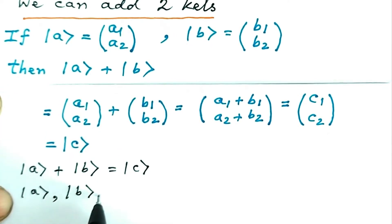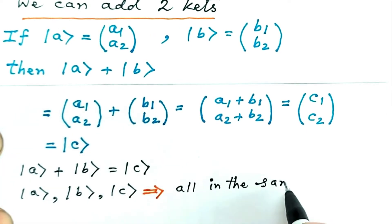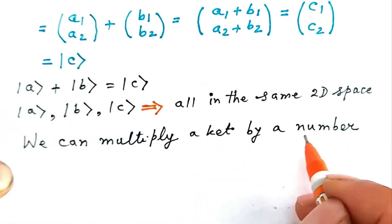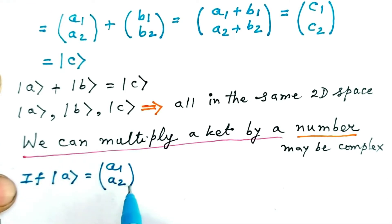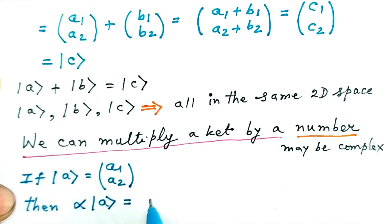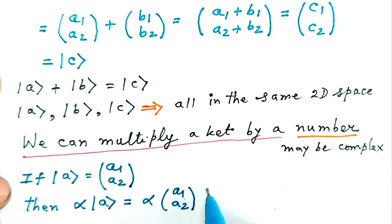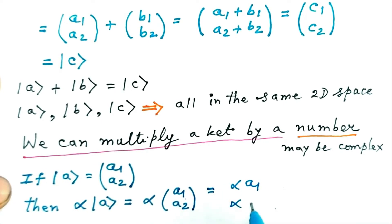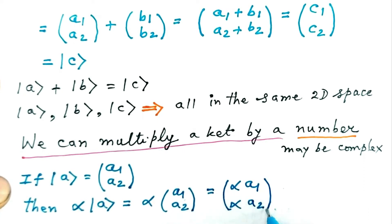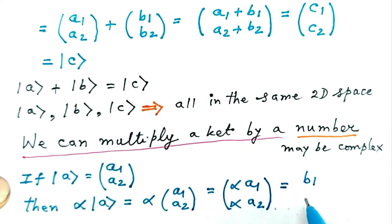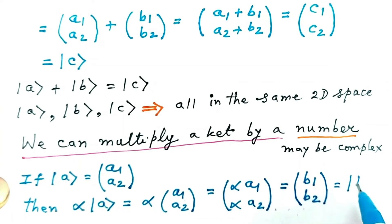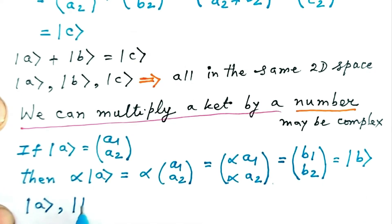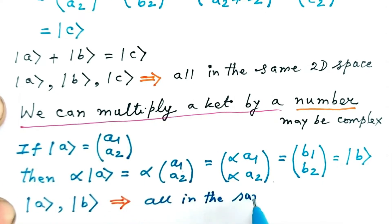Note that Ket A, Ket B, and Ket C are all Kets in the same 2D space. Let us now multiply a Ket by a number, which in general may be a complex number. If Ket A is the 2×1 column matrix (A1, A2), then alpha times Ket A gives alpha times the column matrix (A1, A2). Taking alpha inside, the elements become (alpha·A1, alpha·A2). Defining alpha·A1 as B1 and alpha·A2 as B2, a new column matrix (B1, B2) is generated, which we denote as Ket B. So, alpha times Ket A equals Ket B. Note that Ket A and the newly generated Ket B are both members of the same 2D space.